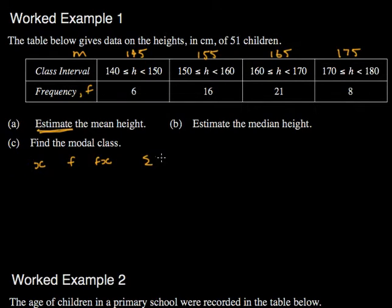And then we would do the sum of fx, all divided by the sum of f. Now we know from the question the sum of f, so I would advise not working that out. I would check it by adding the frequencies up, but you know that it's 51, so that should save some time.